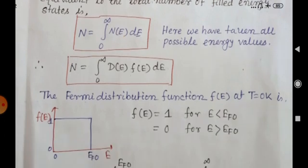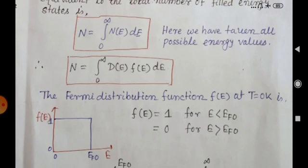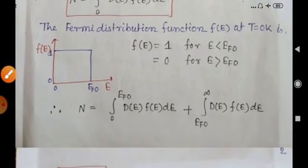We have the expression for F(E) at absolute zero temperature. From the characteristics of the Fermi distribution function, F(E) equals 1 for E less than Ef0, and F(E) equals 0 for E greater than Ef0. We will use these characteristics of the Fermi function to evaluate the integral.